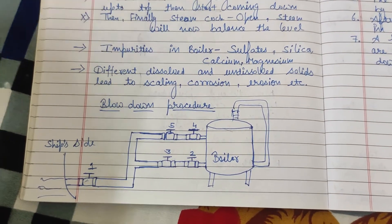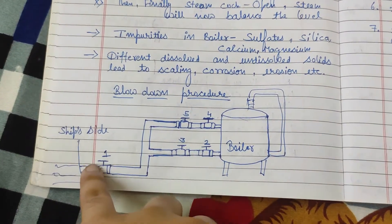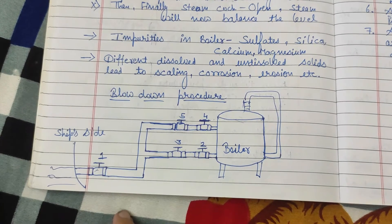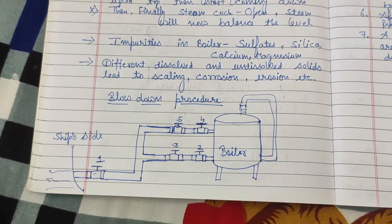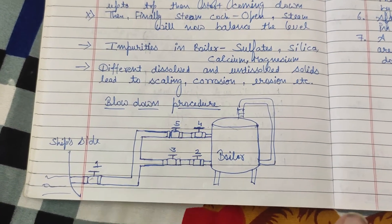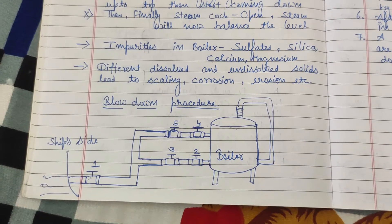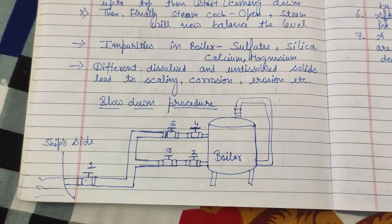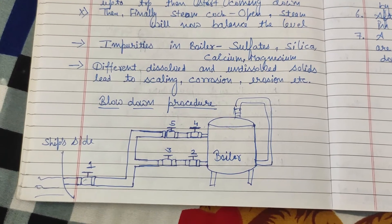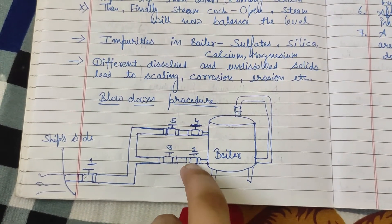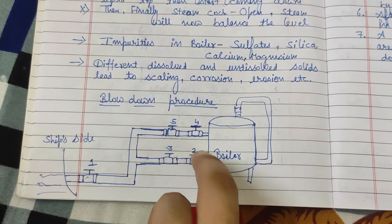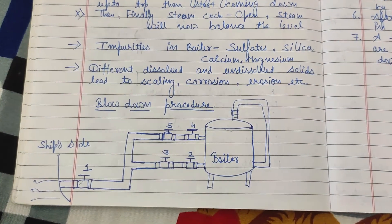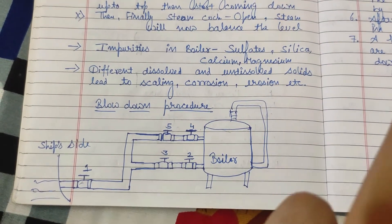Our first step is to open the overboard valve — the ship side valve. Once that is open, we are ready for the blowdown. Taking the example of bottom blowdown: we first open the second valve fully. It is a non-return type valve, so we open it completely in one go.